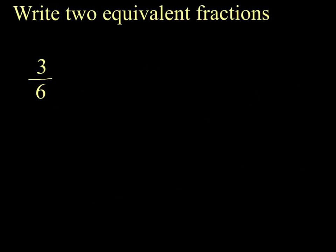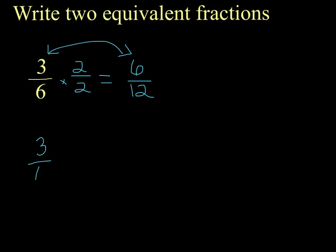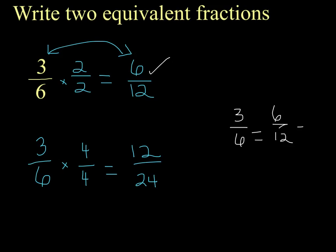Let's find equivalent fractions for three-sixths. Remember: whatever you multiply your numerator by, you must multiply your denominator by. I'll multiply by two-halves: three-sixths equals six-twelfths. They're the same value — they are equivalent. I'll also multiply both by four: four-fourths equals one whole, so this gives us twelve twenty-fourths. So three-sixths equals six-twelfths and also equals twelve twenty-fourths. They all have the same value.